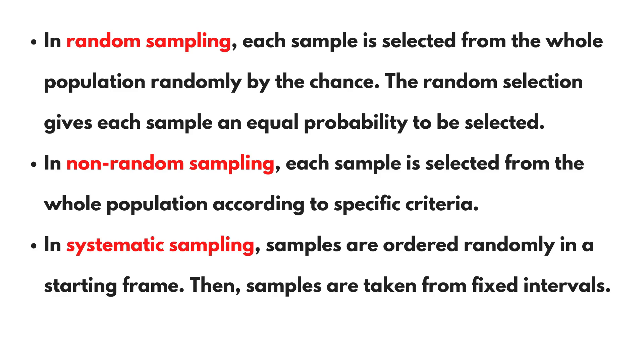In systematic sampling, samples are ordered randomly in a starting frame. Then samples are taken from fixed intervals.